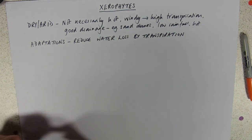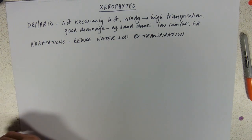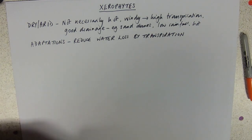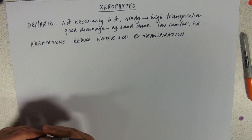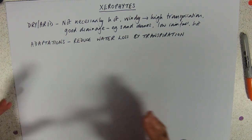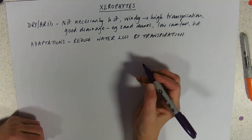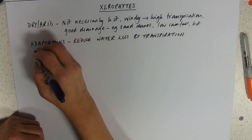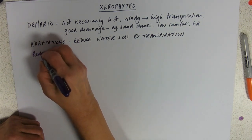We need to think about what factors affect transpiration. One of the factors is the surface area of the leaf - if you've got a bigger surface area then you're going to have a higher rate of transpiration. So to reduce the water loss by transpiration, we have leaves with reduced surface area.